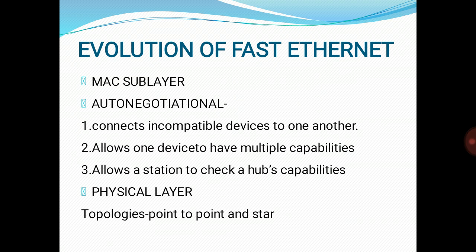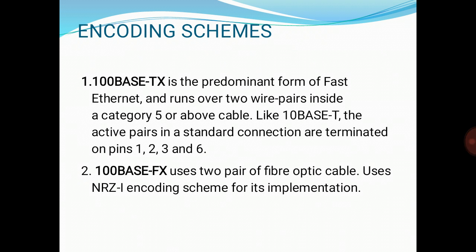The physical layer in Fast Ethernet is more complicated than the one in Standard Ethernet. The topologies used in Fast Ethernet are point-to-point and star topologies. The first encoding scheme is 100BaseTX, which is the predominant form of Fast Ethernet and runs over two wire pairs inside a category 5 or above cable. Like 10BaseT, the active pairs in a standard connection are terminated on pins 1, 2, 3, and 6.